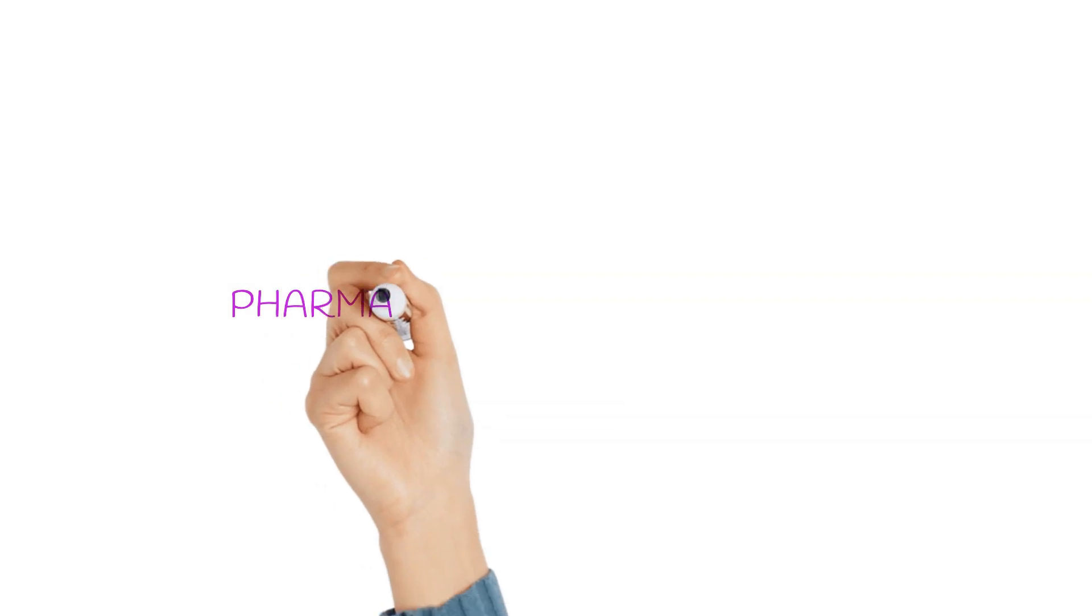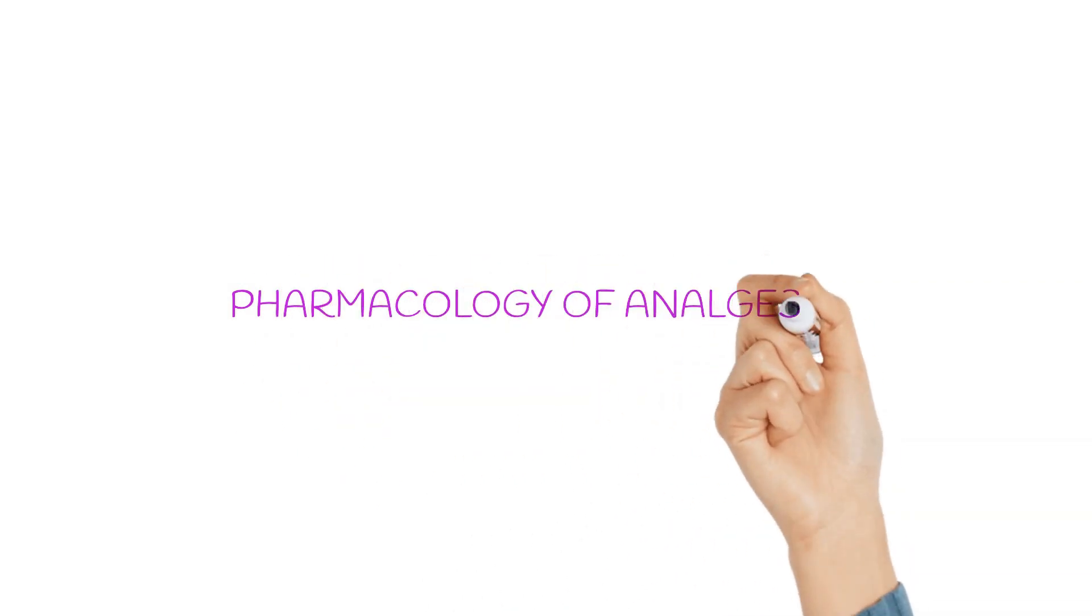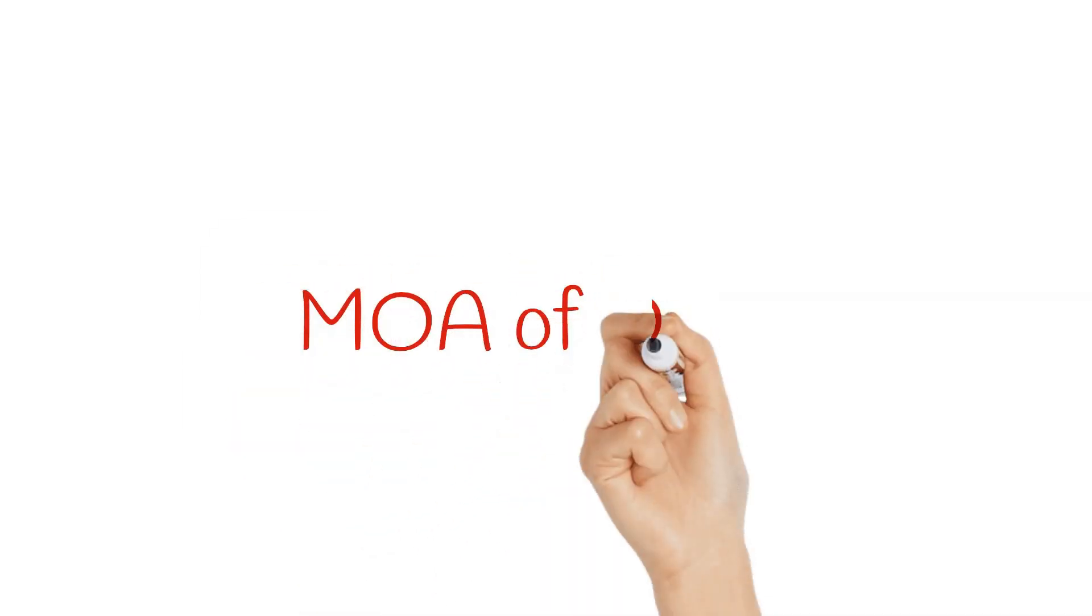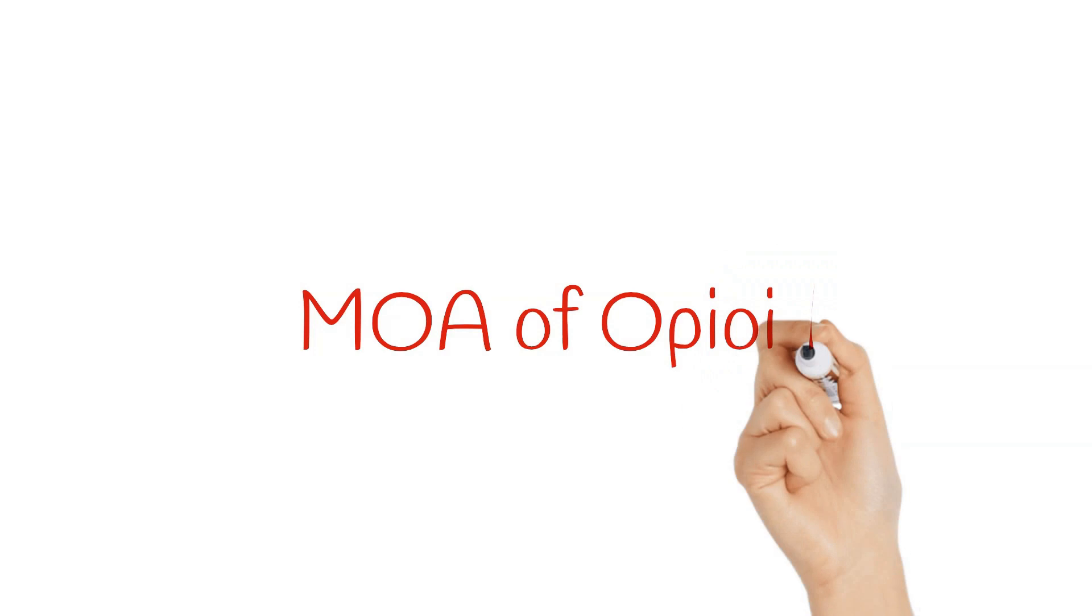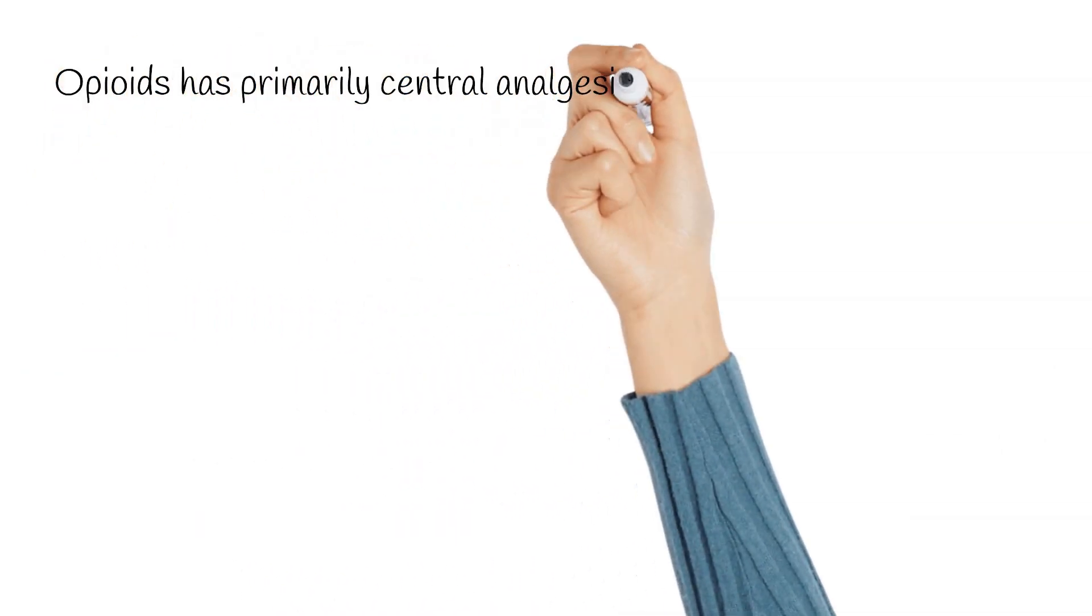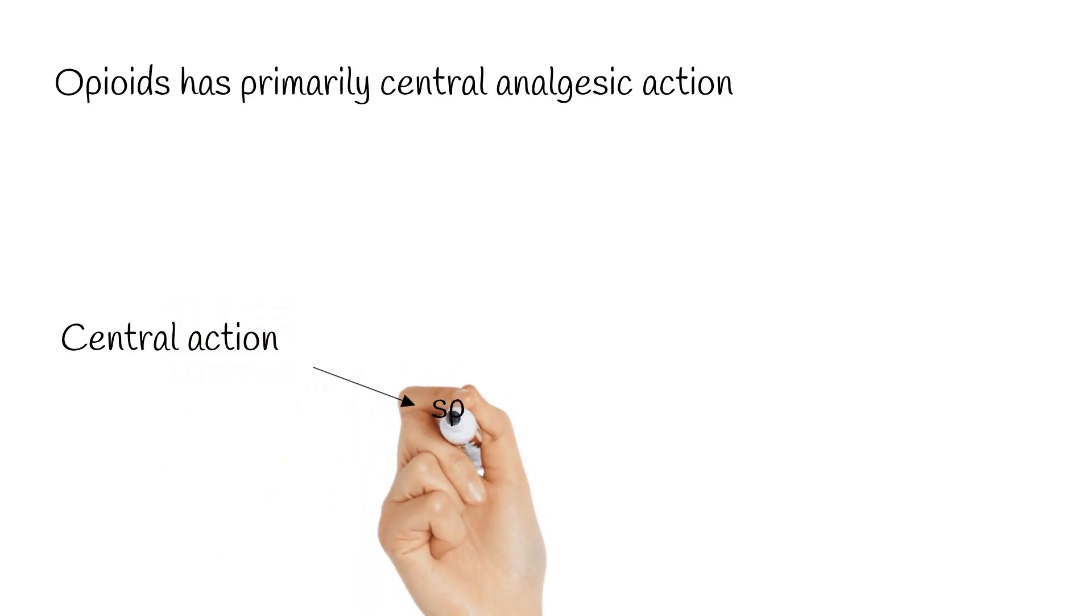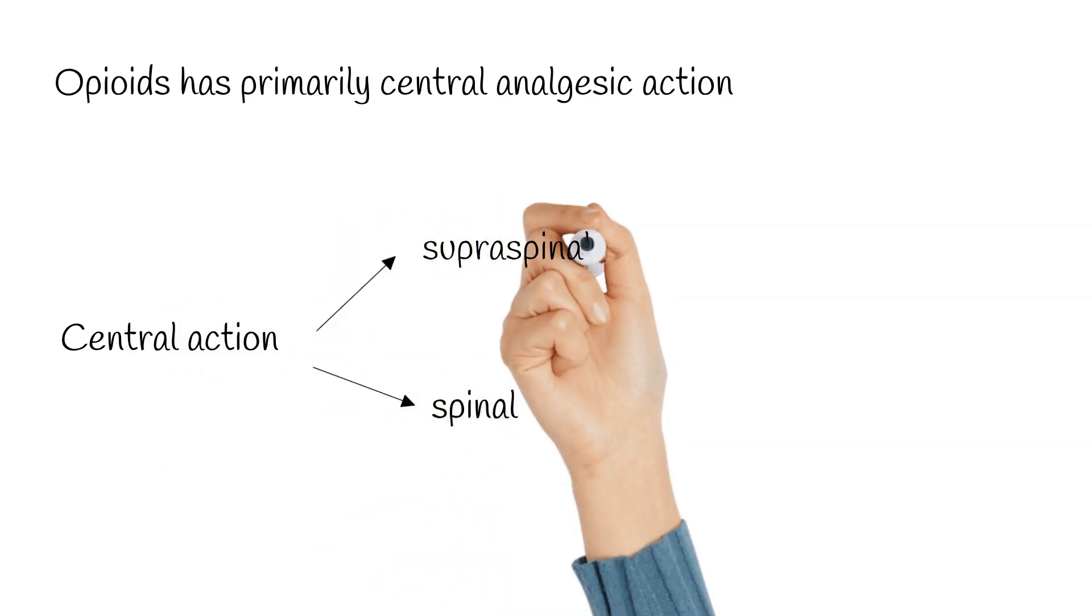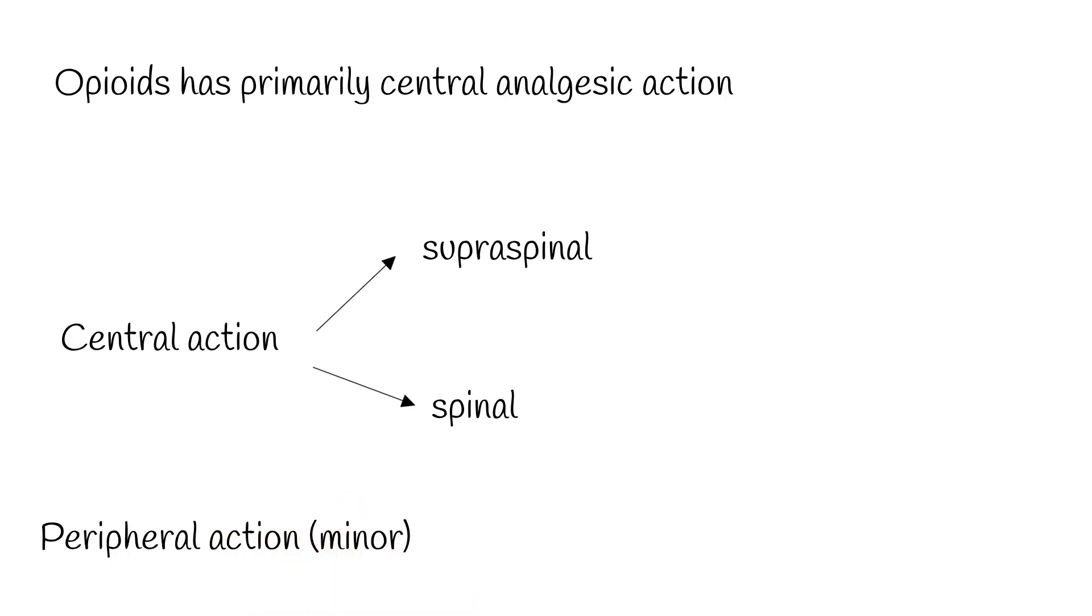Now we will move on to the pharmacology of analgesics. We will be primarily discussing NSAIDs that is nonsteroidal anti-inflammatory drugs and opioids. Though there are other adjuvant analgesics like the newer anti-epileptic drugs, the SNRIs, but we will be keeping our focus to the main analgesics that is NSAIDs and opioids here. Opioids has primarily central action which includes spinal and supra-spinal action and peripheral action as well.